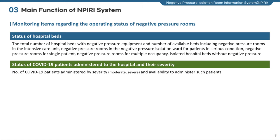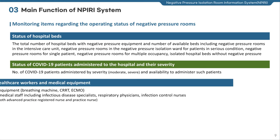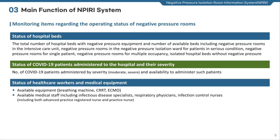Second, the status of COVID-19 patients admitted to the hospital, including the number of patients by severity — moderate to severe — and availability to admit such patients. Third, the status of medical equipment and healthcare workers, including types of infectious disease treatment equipment such as breathing machines, CRRT, and ECMO, their availability, and the number of medical staff such as infectious disease specialists, respiratory physicians, and infection control nurses, including both advanced-practice and registered nurses.